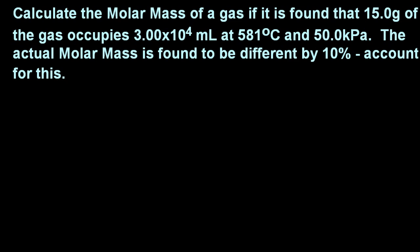PV equals nRT. Molar mass. PV equals nRT. And, well, you know, the n. The number of moles is mass over molar mass, isn't it? So that's where molar mass is hidden.